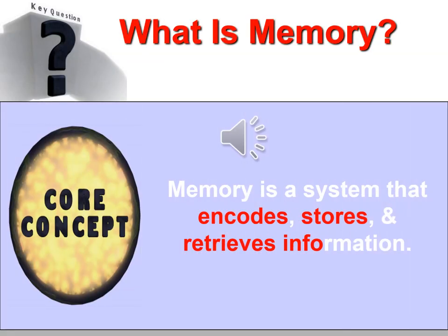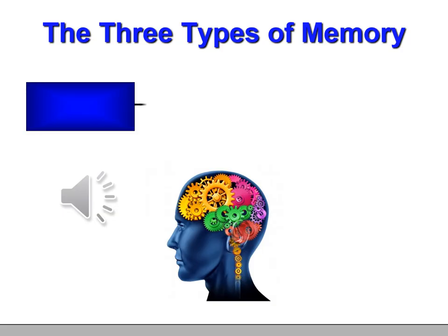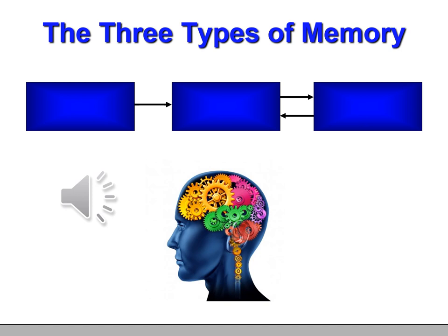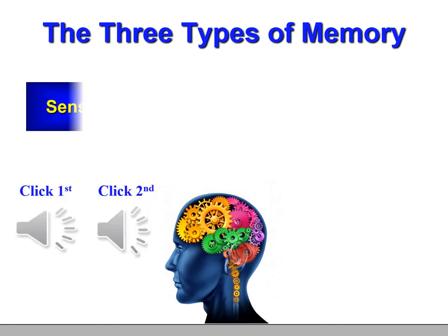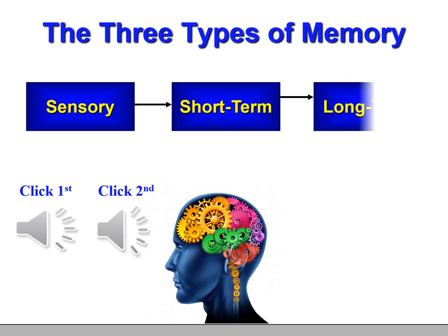We will define memory as a system that encodes, stores, and retrieves information. The nice thing about this definition is that if you learn those three key components, you'll also know the three stages of long-term memory — a nice two-for-one arrangement.